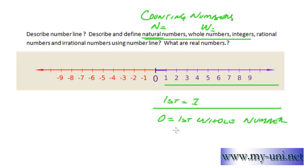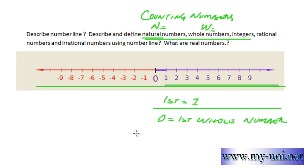There is no last whole number. If you include negative numbers as well, then you're dealing with integers, represented by capital Z. So: N for natural numbers, W for whole numbers, and Z for integers.